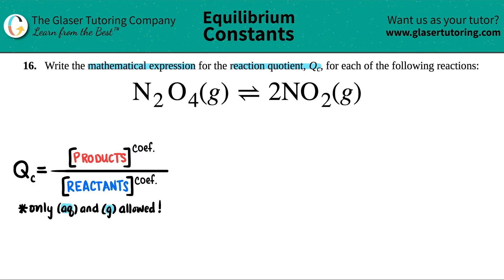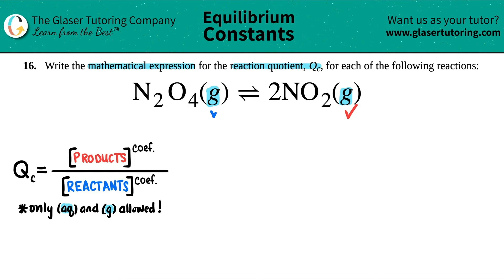So the first thing you should do is check those states. Here I have a gas and a gas. Since gases are allowed, both of these are going to be in my QC. I'll give a check for this one and a check for this one.